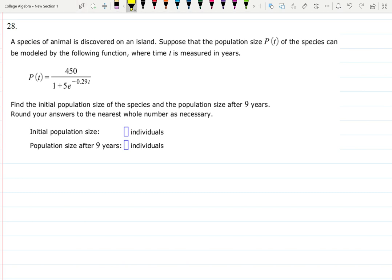For example, you see a problem about some species of animals. The species of animal is discovered on the island. Suppose the population size is denoted as P of t. That's pretty standard. It can be modeled by the following function, and they gave you the following function. Let me just put it in the box. t is measured in time, measured in years. That's the idea.